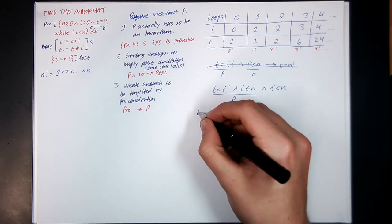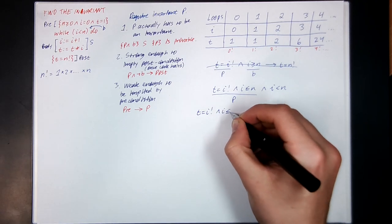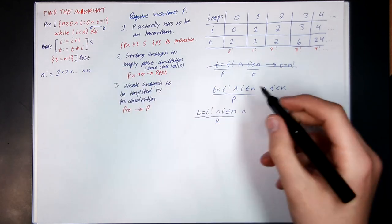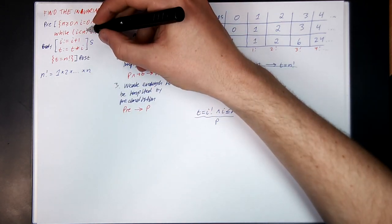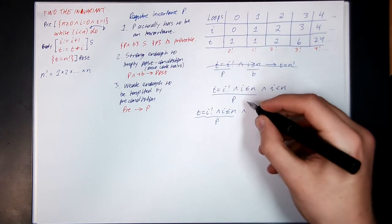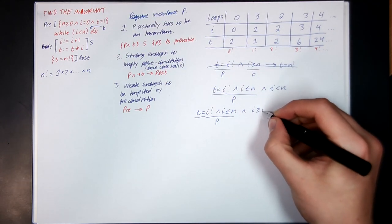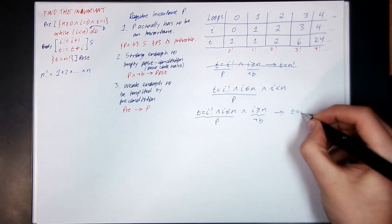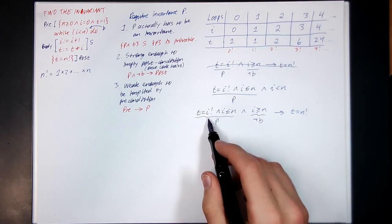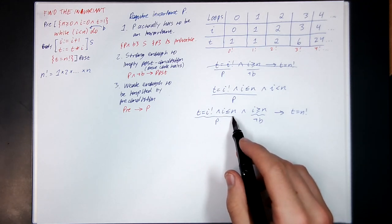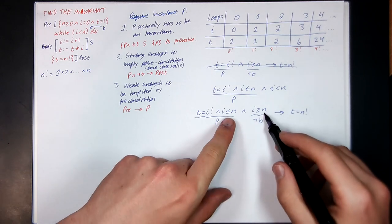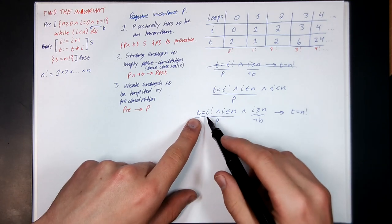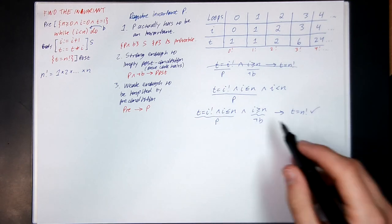Importantly, the second condition should now hold. If P is t equals i factorial and i less than or equal to n, and not B means i is greater than or equal to n, then combining i less than or equal to n with i greater than or equal to n means i equals n. Together with t equals i factorial, that gives t equals n factorial. So rule 2 is good.